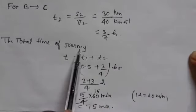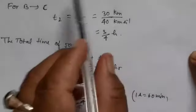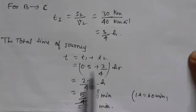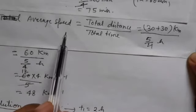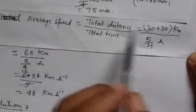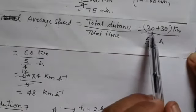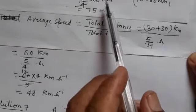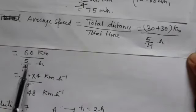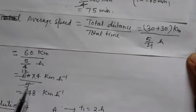The total time of the journey is T1 plus T2, which is 0.5 plus 0.75 hours, giving 1.25 hours. For the second part, average speed equals total distance divided by total time. Total distance is 30 plus 30 equals 60 km, divided by 1.25 hours. After solving, 60 divided by 1.25 gives 48 km per hour.